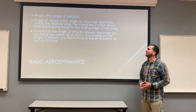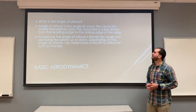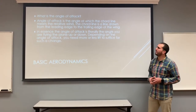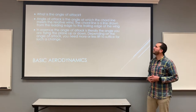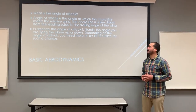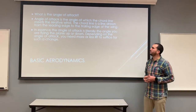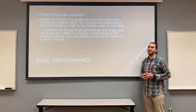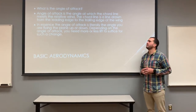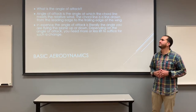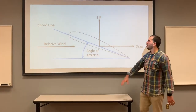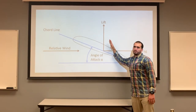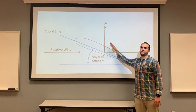What is angle of attack? The angle of attack is the angle at which the chord line meets the relative wind. The chord line is a line drawn from the leading edge to the trailing edge of the wing. Essentially, the angle of attack is literally the angle at which you are flying the plane up or down. Depending on your angle of attack, you need more of the lifting surface or chord exchange. This is an example of angle of attack — this is the chord line. When the angle of attack is too great, the airplane will stall.